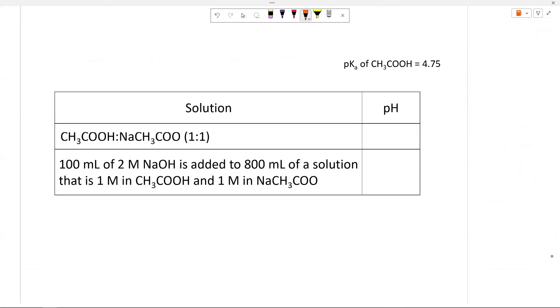Let's think about a buffer solution, and then what happens when we add a base to the buffer solution. Calculating the pH when we take a buffer and add a base. This is a one-to-one acetic acid, CH3COOH, and sodium acetate, NaCH3COO, buffer. We know that when we have equal amounts of the acid and the conjugate base, the pH will equal the pKa, so pH = 4.75. Now I'm going to run a reaction. And I know that I have 800 milliliters of the solution, that's one molar in the acid, one molar in the conjugate base.